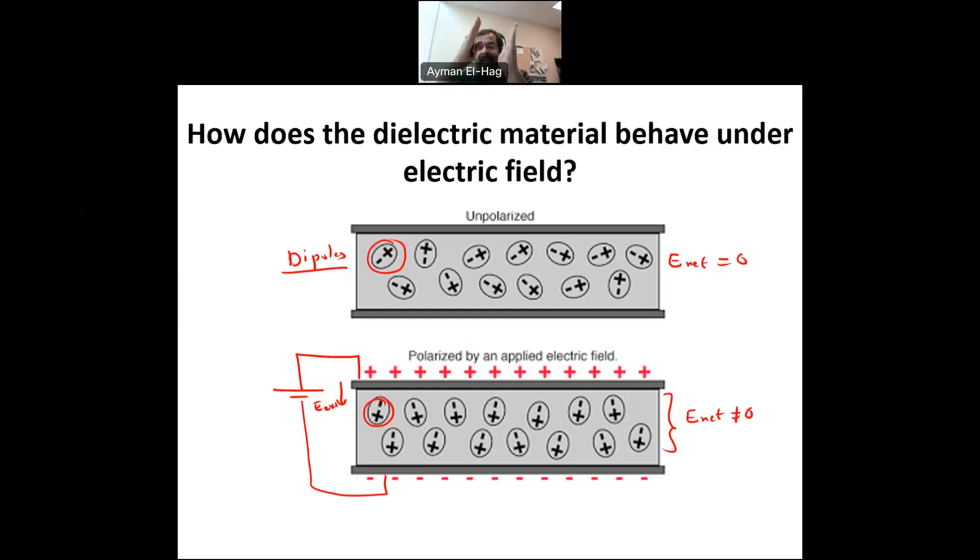By aligning all these dipoles, you are aligning them, and you are creating an internal source of energy coming from the material itself. And now, once you release the electric field, this energy will be released if you connect to it an external circuit. And then, until you release all this energy, then we will go back to the original case where we don't have any net electric field, like the spring.